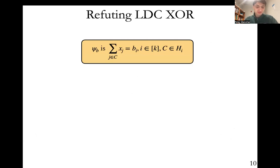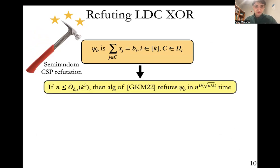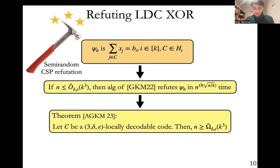And indeed, this is what we show. This is the main thing we prove in our paper. We hit this problem with the semi-random CSP refutation techniques, and we're able to show that if the block length n is less than k cubed, then this algorithm in our prior work succeeds in refuting the instance psi_b with high probability over b in n^(O(sqrt(n/k))) time. So it's not an efficient refutation algorithm by any means, but this doesn't matter. We just need to argue that these instances are unsatisfiable. So the runtime doesn't matter. If we combine this with the stuff I've said earlier about showing how this is equivalent to an LDC lower bound, then we indeed get our desired lower bound, which says that n has to be at least k cubed. And that's our main result.